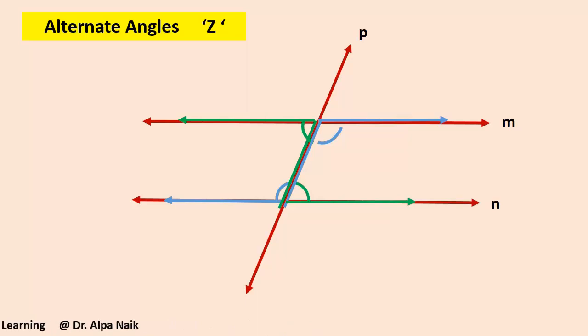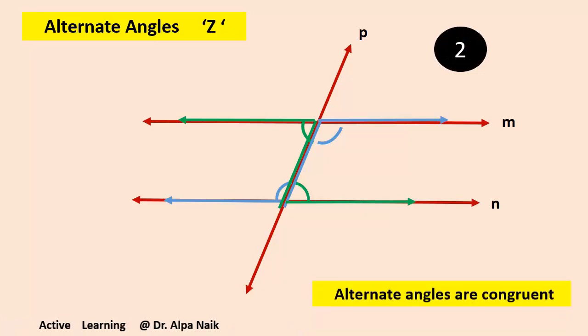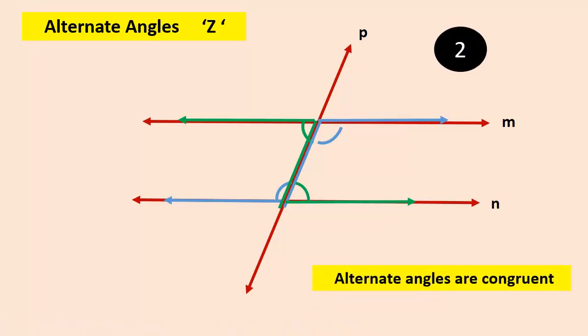What are alternate angles? Actually, they are the pair of angles which are on the opposite sides of transversal and their arms are on the transversal. They show opposite directions. Children, these two pairs of alternate angles are congruent to each other, that means the measures of this pair are the same.